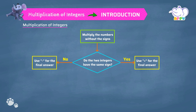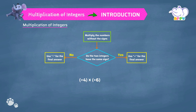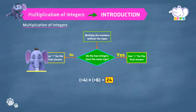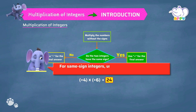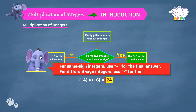Let's look at a few examples. Plus 4 into plus 6. To find the product of plus 4 and plus 6, we first find the product of 4 and 6, which equals 24. Here 4 and 6 are both positive integers, so the answer is plus 24. For same sign integers, use plus for the final answer. For different sign integers, use minus for the final answer.